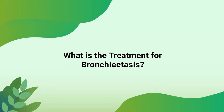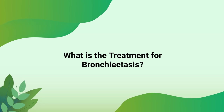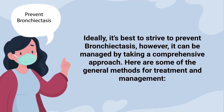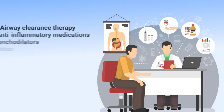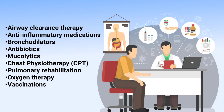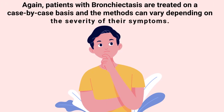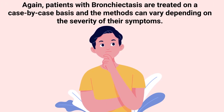Ideally it's best to strive to prevent bronchiectasis; however, it can be managed by taking a comprehensive approach. General treatment and management methods include airway clearance therapy, anti-inflammatory medications, bronchodilators, antibiotics, mucolytics, chest physiotherapy, pulmonary rehab, oxygen therapy, and vaccinations. Patients with bronchiectasis are treated on a case-by-case basis, and methods can vary depending on the severity of their symptoms.